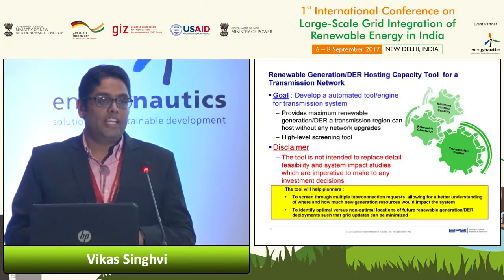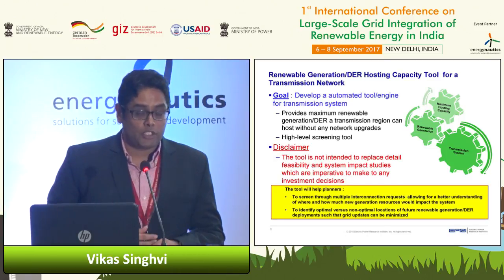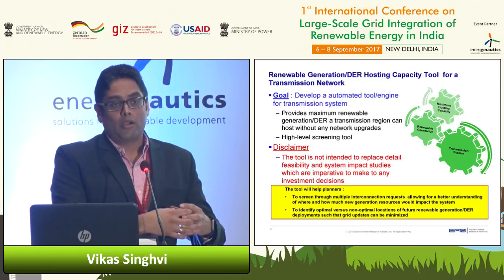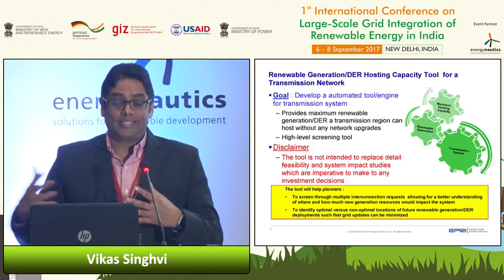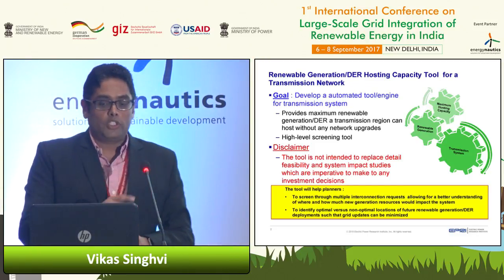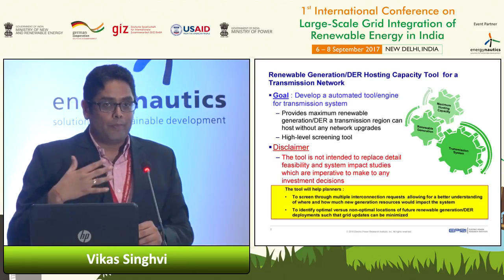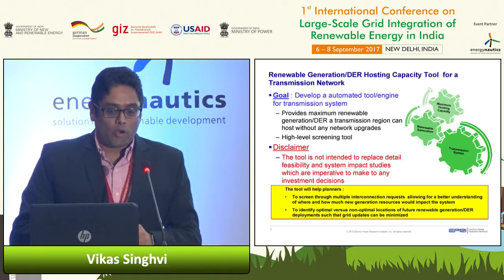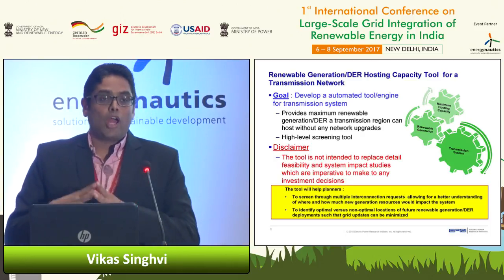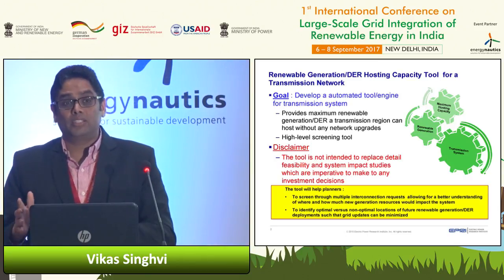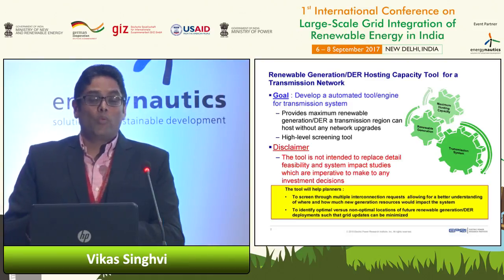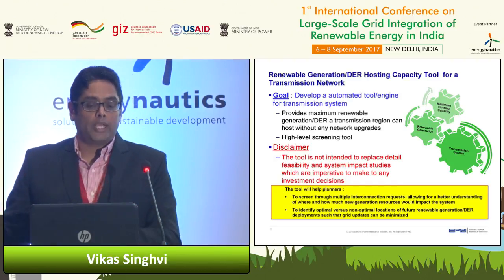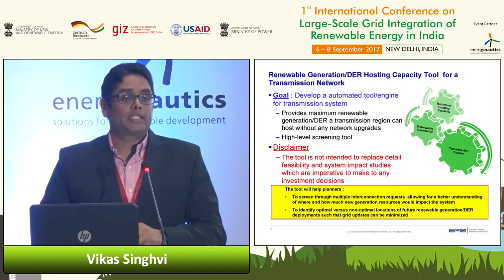The goal was to develop an automated engine for a transmission system which can provide the maximum renewable generation a transmission region can host without any network upgrades. A region could be a small zone, a bigger area, a whole system, or a whole balancing authority area. The main purpose of this tool is to provide planners with the ability to screen through multiple interconnection requests, allowing them a better understanding of where and how much renewable generation can impact the system, and also help identify where detailed studies are required.